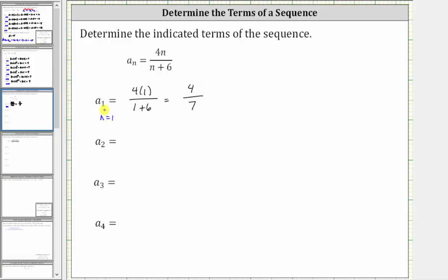4/7 doesn't simplify, so a_1 = 4/7. What we don't want to do is convert to a decimal and round, because then we no longer have the exact value of the term.